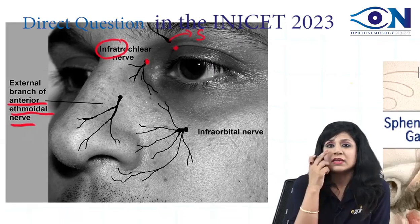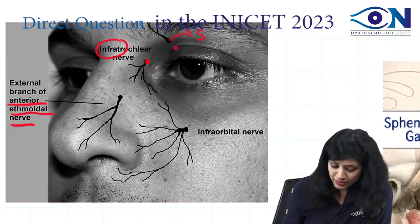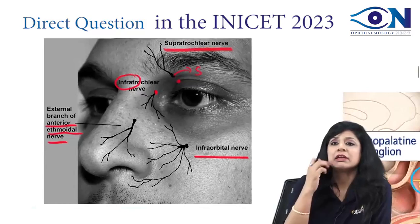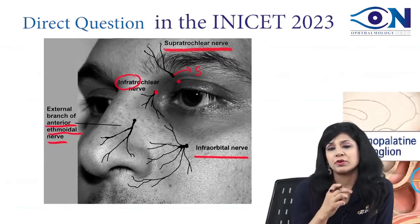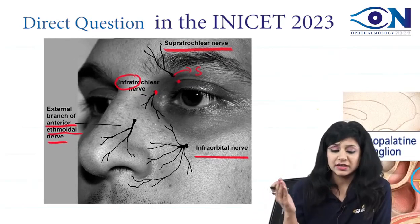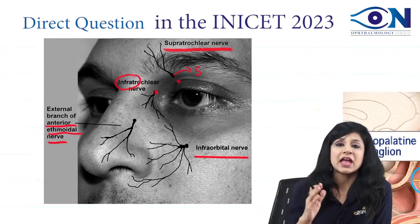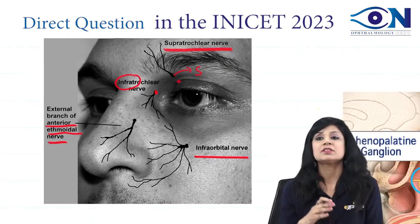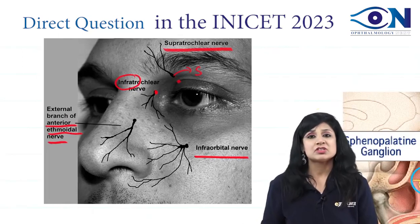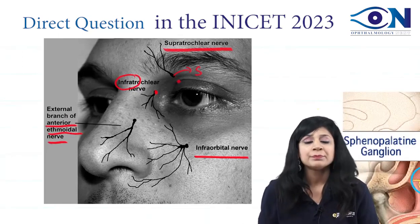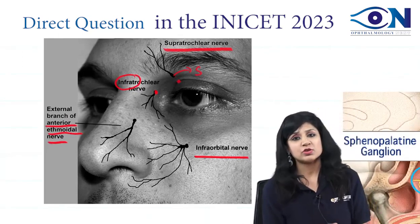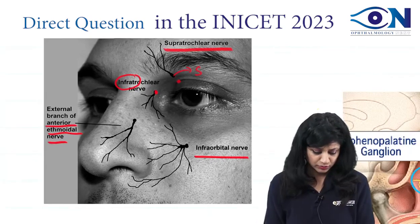Then if you look near the orbit, this will be your infraorbital. So just by one diagram you can learn four different ones: the supratrochlear, the infratrochlear, the anterior ethmoidal, and the infraorbital. If any of the images is not clear, do not worry — I will share the images or the PDF afterwards.